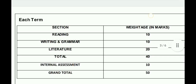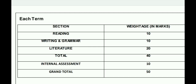Ab yaahan par jo hai, mein aapko batata hoon ki weightage kis hisaab se aap logon ka rahega Term 1 aur Term 2 ke liye. Usse pehle aapne notice kiya ho toh mein aapko bata doon — aapke jo Beehive jo hai, us book mein se aapke kaun kaun se chapters delete kiye gaye hain. So aapka yaahan par hai: The Lake Isle of Innisfree. Next chapter hai The Snake and the Mirror. The Duck and the Kangaroo. Next, Kathmandu. Next chapter, A Slumber Did My Spirit Seal. So overall Beehive mein se aapke 5 chapters deleted kiye gaye hain CBSE ke through.